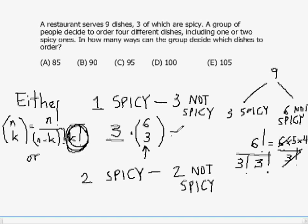Thanks, Melek. So we have three times 20, which is 60. So there are 60 ways in which we can order one spicy dish and three not spicy.